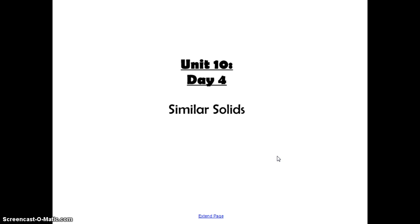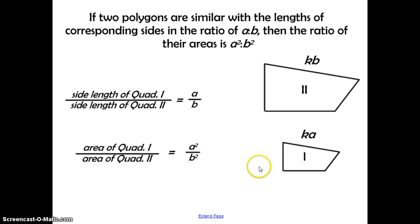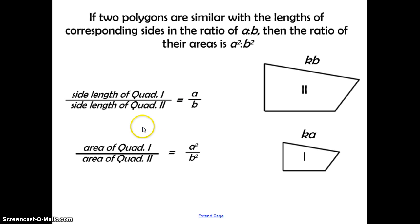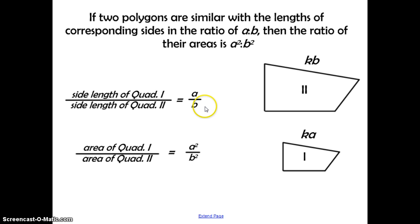Unit 10, Day 4: Similar Solids. If two polygons are similar with the lengths of corresponding sides in the ratio of A to B, then the ratio of their areas is A squared to B squared. We talked about this back in Unit 5 with similar triangles and similar polygons. If you take the side length of quadrilateral 1 and compare it to the side length of quadrilateral 2, they simplify into a ratio of A to B, and that's what we call the scale factor.